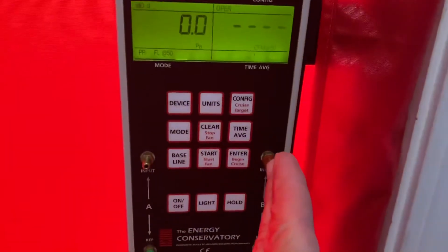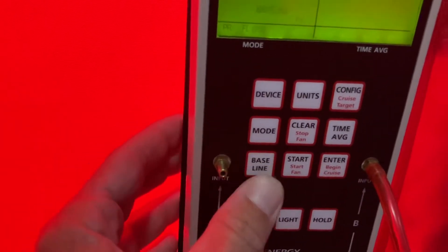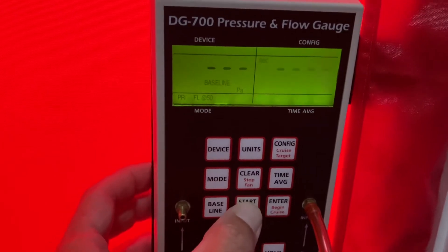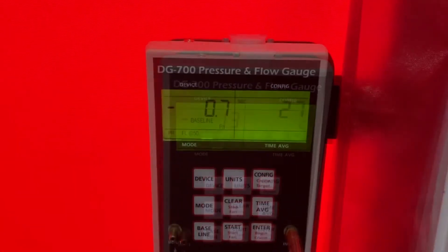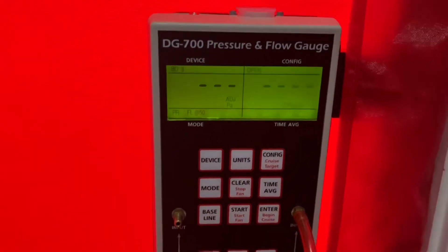Then we're going to move on to getting a baseline. We'll hit the baseline button, then we'll push start. That needs to run for about 30 seconds. When that's done we'll hit enter and now the baseline is established for the manometer.